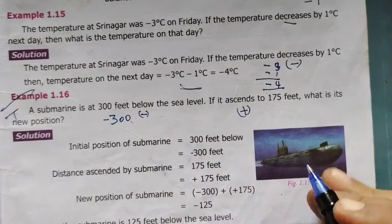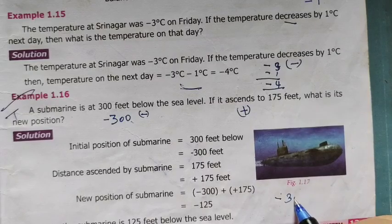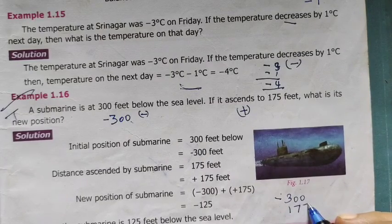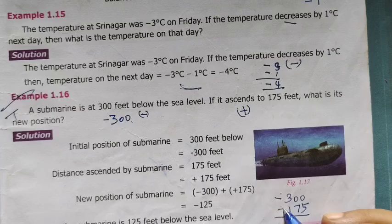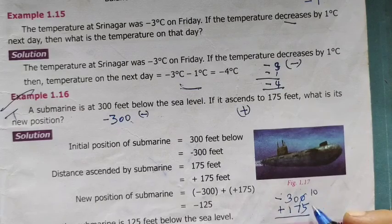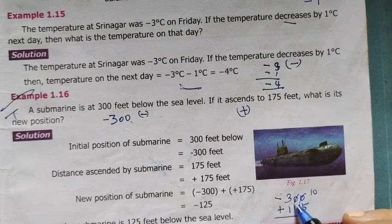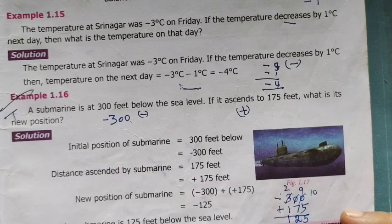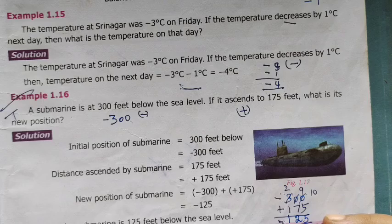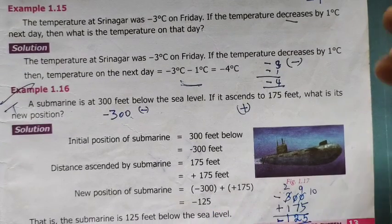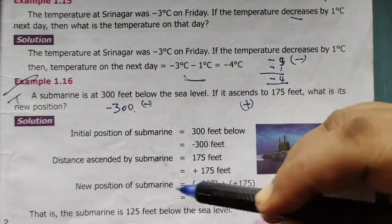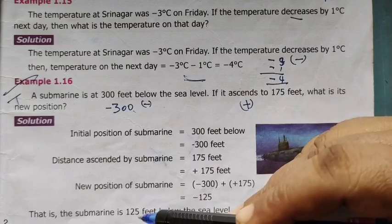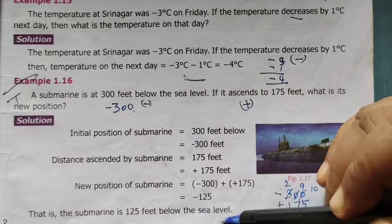Minus 300 plus 175. Opposite signs means separate. So this 10, 10 minus 5 is 5. This is 9, 2, 2 minus 1 is 1. Greater number sign minus. So minus 125. The submarine is at 125 feet below the sea level.